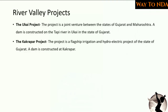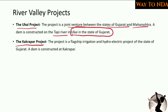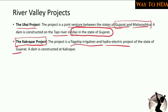There are two important river valley projects on the Tapi river: the Ukai project and the Kakrapar project. The Ukai project is a joint venture between Gujarat and Maharashtra, with a dam constructed at Ukai in Gujarat. The Kakrapar project is a flagship irrigation and hydroelectric project in Gujarat, with the dam at Kakrapar — this is Gujarat's own project with no joint venture.